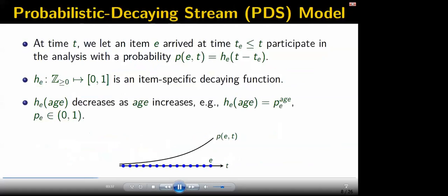We introduce the probabilistic decaying stream model. The PDS model generalizes the insertion-only stream model and the sliding window stream model. At time T, an atom E participates in the analysis with a probability P(E,T), which is a function of the atom's age T minus T_E. H_E is an atom-specific decaying function which decreases as the atom's age increases. For example, the decaying function could be the exponential decaying function. The PDS model ensures that atoms from past to present all have a chance to participate, but recent data has a larger chance than past data.